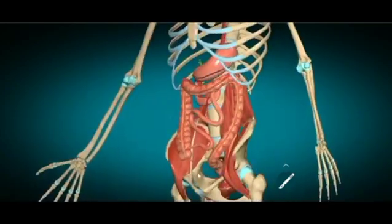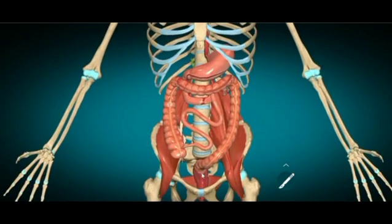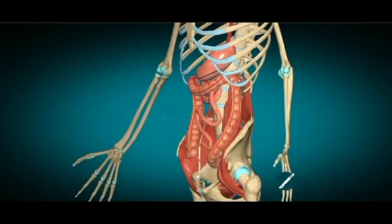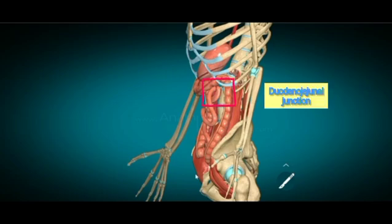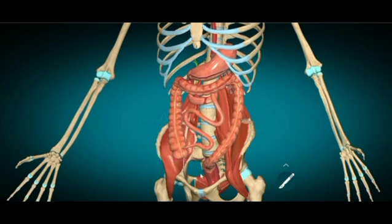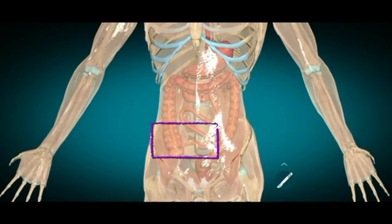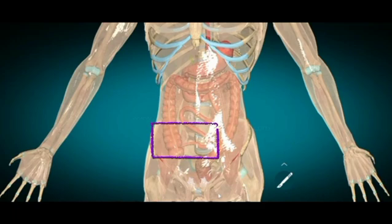Let's talk about the jejunum and the last part of the small intestine, the ileum. Both together measure about 20 feet long. Basically, the upper two-fifths make up the jejunum. The jejunum begins at the duodenojejunal junction, and the ileum ends at the ileocecal junction. The coils of the jejunum occupy the upper left part of the abdominal cavity, and the ileum tends to occupy the lower right part of the abdominal cavity as well as the pelvic cavity.